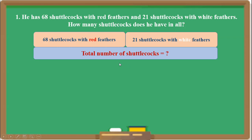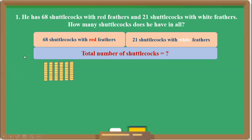Let's solve this. For 68, the digit 6 is at the 10's place so we take 6 tens, and the digit 8 is at the 1's place so we take 8 loose sticks. For 21, the 2 is at the 10's place so we take 2 tens, and the 1 is at the 1's place so we take 1 loose stick.